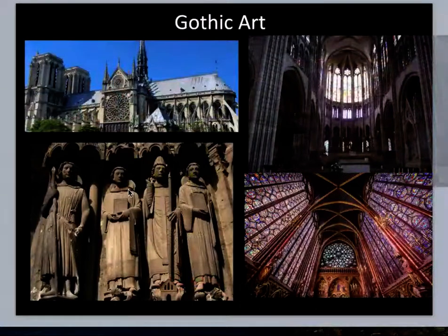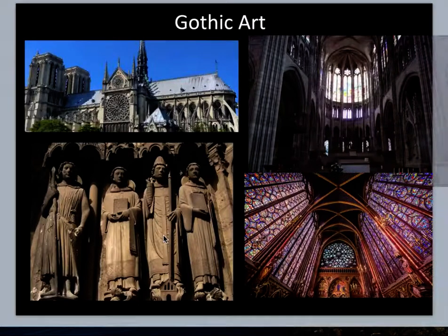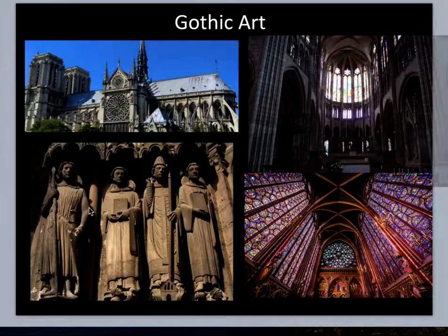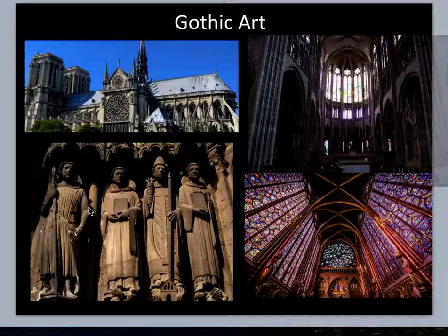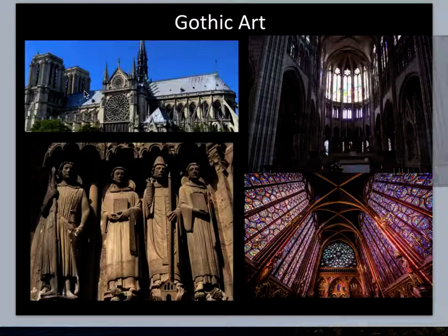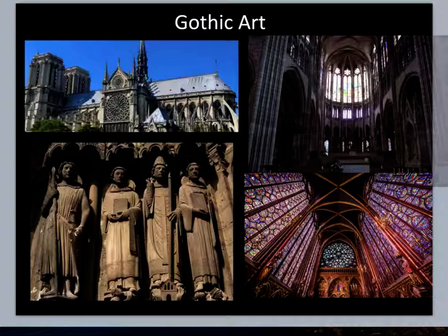Here we have the Gothic cathedral — the next time period. These sculptures on the portals at Chartres are very naturalistic compared with the earlier ones. Chartres took so long to build that on one end of the church you see Romanesque-style portrayals of saints, and on the other side you see these Gothic naturalistic sculpted images. The development of the interior of the cathedral aimed to represent heaven, flooded with beautiful light representing the presence of God.